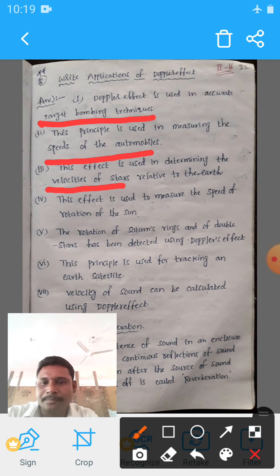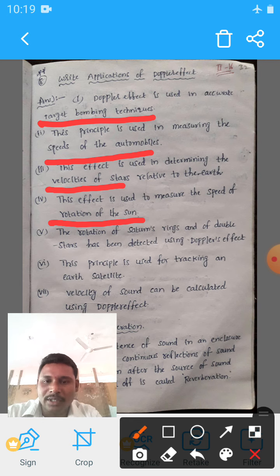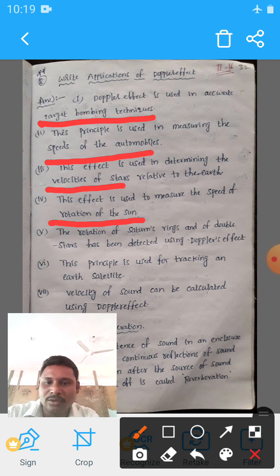This effect is used to measure the speeds of the rotation of the sun. The speed of rotation of the sun can be determined. Rotation of the Saturn rings and double stars has been detected using Doppler effect. Saturn rings, planets, and double stars' speed can be found out.